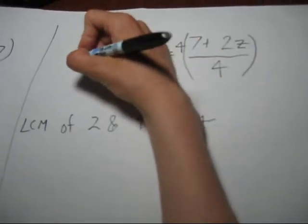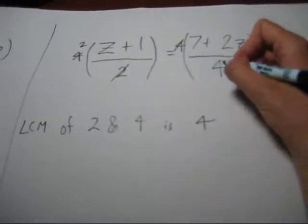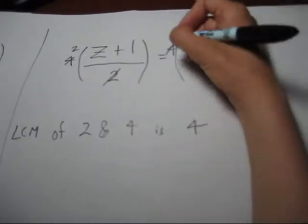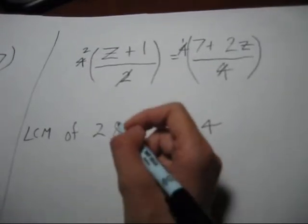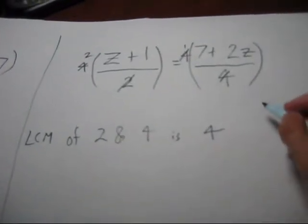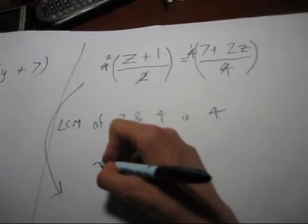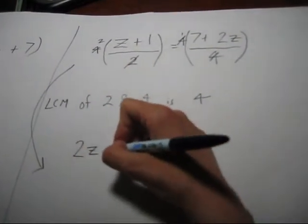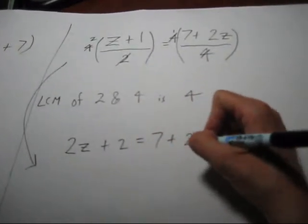And things will cancel like we meant it to. 2 goes into 4 twice. 4 goes into 4 one time, so that's really actually just a 1. Don't even need to write that if you don't want to. And then we need to distribute that 2 through. 2z plus 2 equals 7 plus 2z.